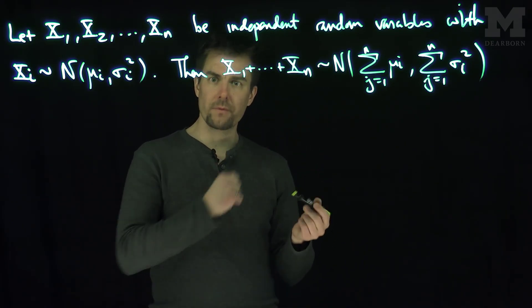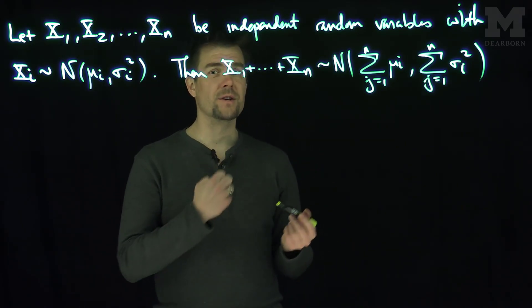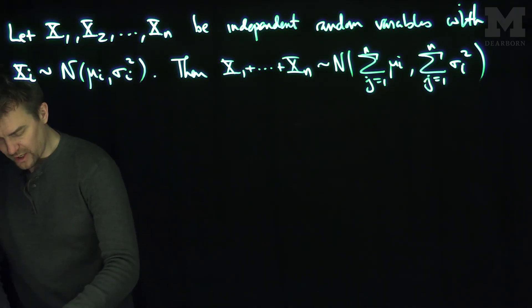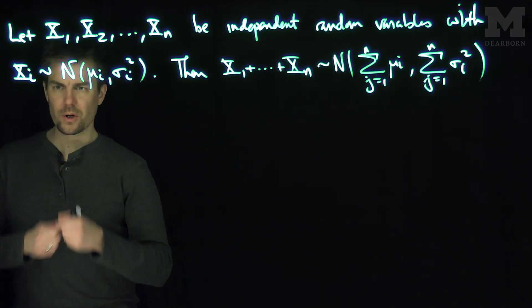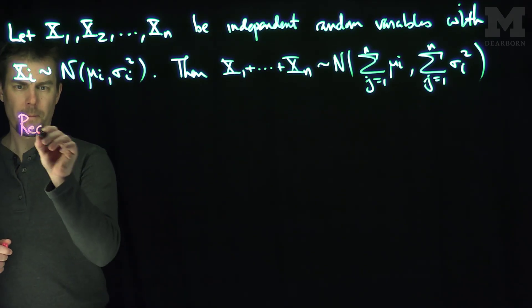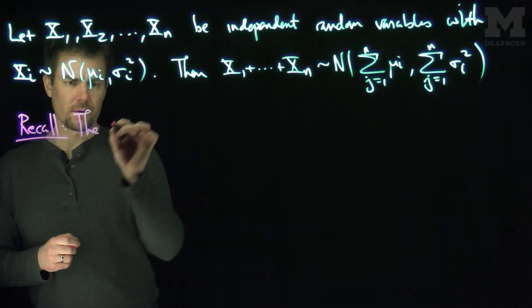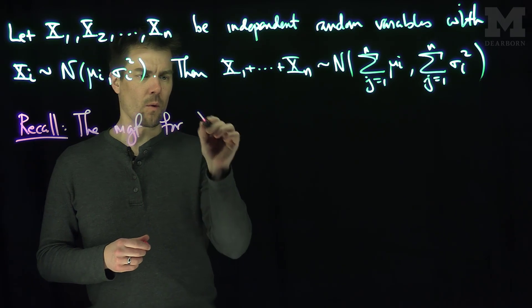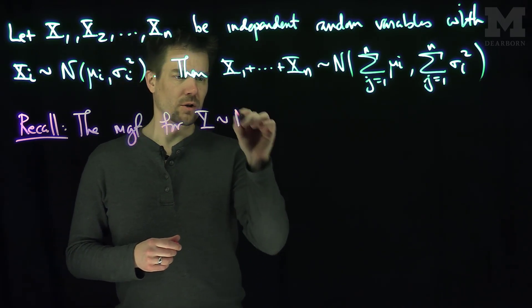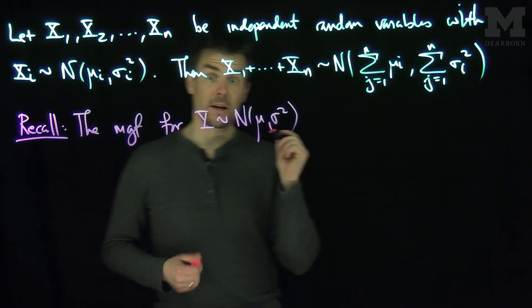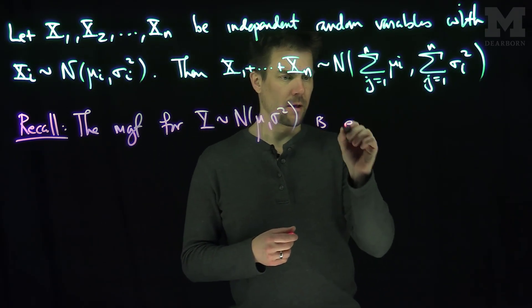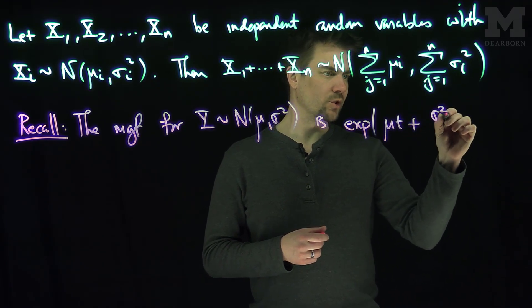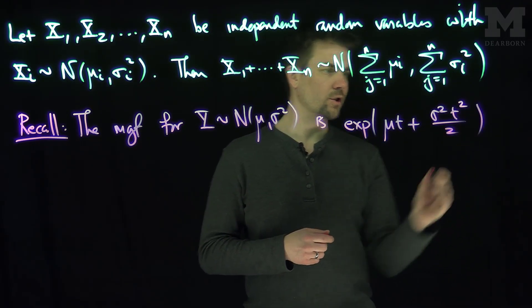What's needed for this proof is we need to actually understand what the distribution is, and the distribution remains normal. So let's see that. To do this we recall what the moment generating function for a normal random variable is. Recall, the MGF for Y, which is normally distributed with mean μ and variance σ squared, is the exponential function of μt plus σ squared t squared over 2.